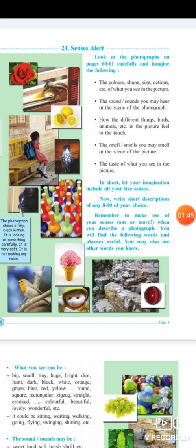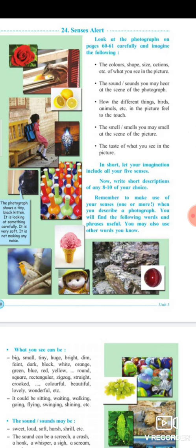You have to analyze and see the picture, then imagine the color, shape, size, and actions. For example, a squirrel's color could be described as 'goldenish' or 'brownish,' having a black line on its body. For action, it might be eating. The sounds at the scene — like the chirping of a bird or the eating sounds of the squirrel — should also be noted.